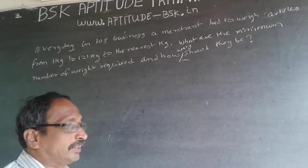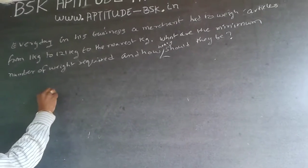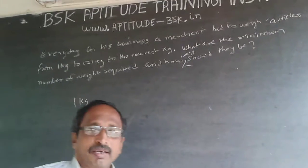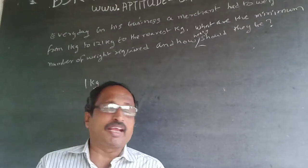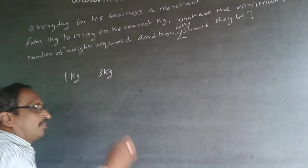Now for example, in case a person wants one kg, you should have a one kg weight. Then he can give one kg. But in case a person wants two kg, he doesn't require a two kg weight—he can have a three kg weight.